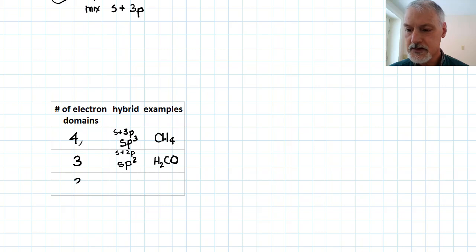And finally, if I need two electron domains, that's mixing together an s and only one p orbital, I create what's called an sp hybrid, which is a linear shape. And that happens in something like carbon dioxide.